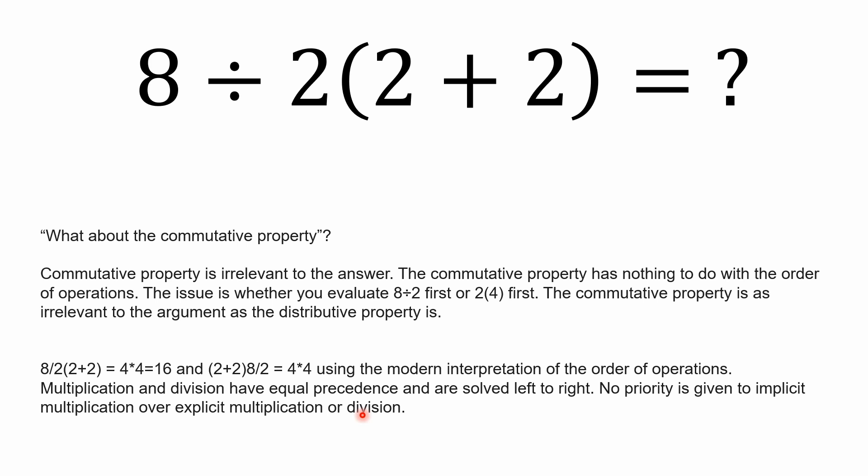No priorities given to implicit multiplication over explicit multiplication or division. So the way I look at it is, when I look at this problem, I'm solving 8 divided by 2. After I've resolved what's in here and I get 4, then I'm doing 8 divided by 2 and getting 4, taking 4 times 4 and getting 16. That's the answer that I go by. That's the order of operations that I know and that I've grown up with. And I'm in my 60s. So that's what I use. That's really the way that it should be done.